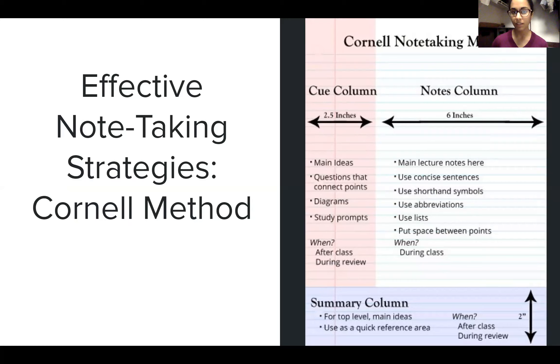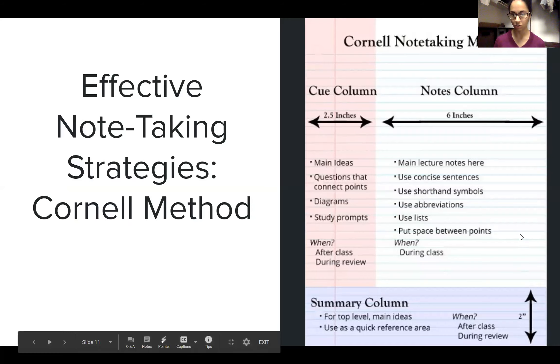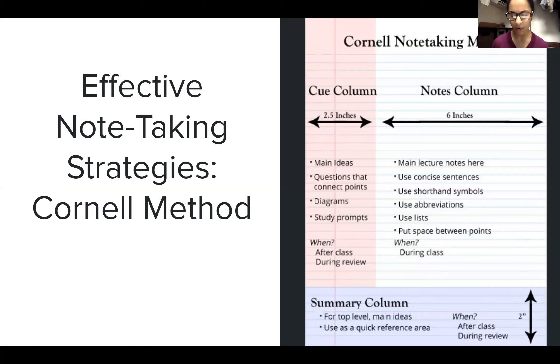This is one example of a note-taking method, which is called the Cornell method. And maybe some of you have heard of this already or do this already. The Cornell method really says that you should divide up your notes pages into three sections. One is the actual notes that you take during the lecture, during class, where you're using shorthand, you're writing in live time, you're noting down all the important points.